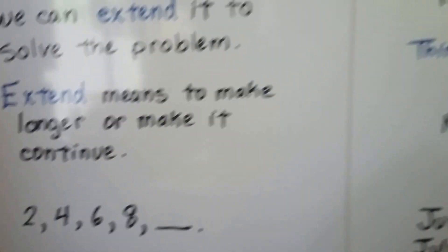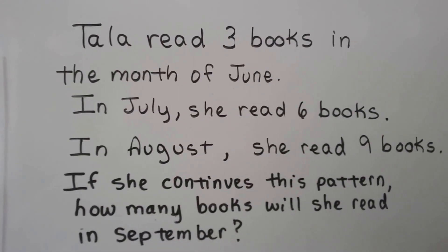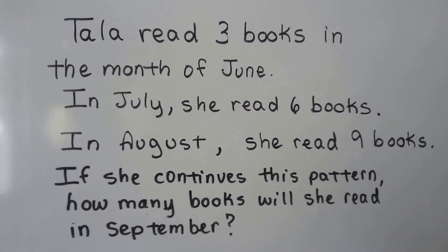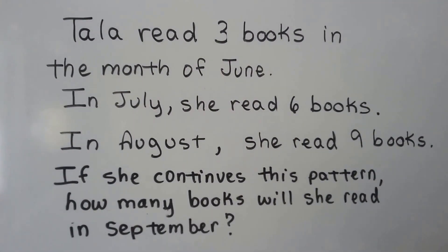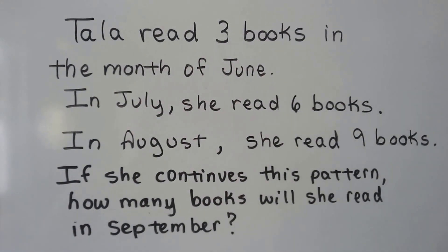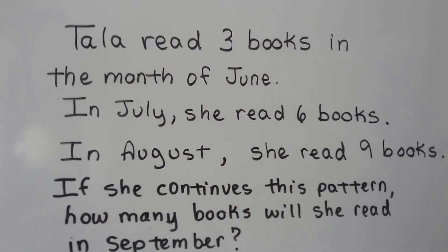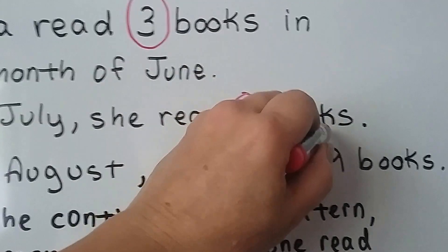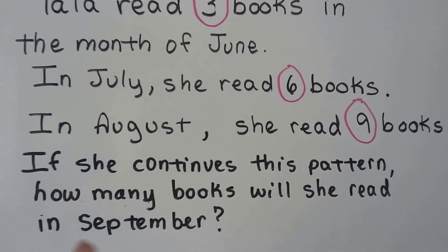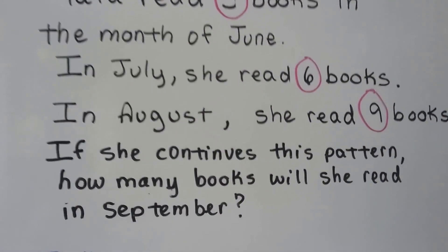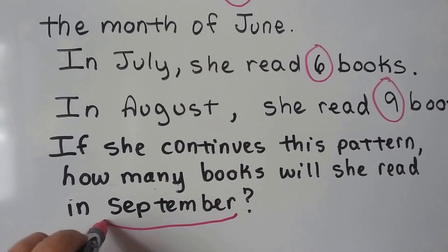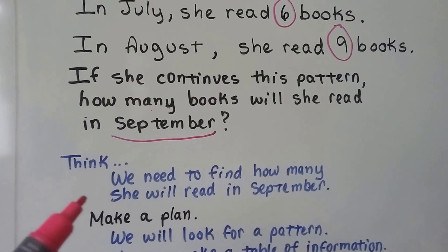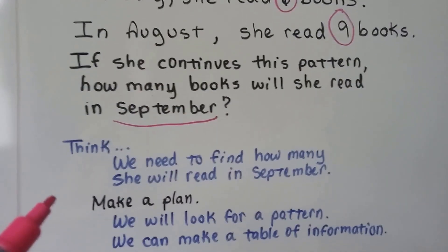We're going to do some word problems. Tala read 3 books in the month of June. In July, she read 6 books. In August, she read 9 books. If she continues this pattern, how many books will she read in September? The first thing we need to do is circle our important words and numbers. 3 is important, 6 is important, 9 is important. It says if she continues this pattern, how many will she read in September? We're trying to answer what it's asking of us — we need to find how many she will read in September.